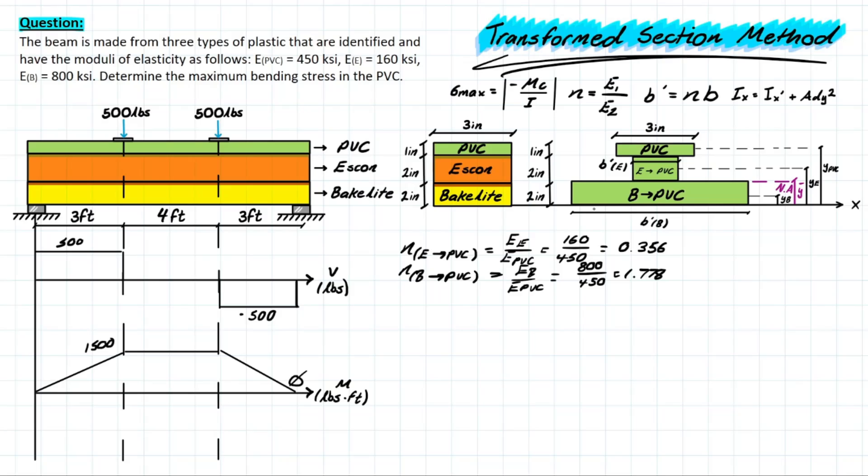Now we can proceed with finding these B' values for each of these new transformations. So the first one we can do is for the Escon. So if we do B'e, it's going to be the modular ratio that we just solved for, which is 0.356. And we're multiplying it by its original length, which was 3 inches. Solving for that, you're going to be left with 1.068 inches. And then you do the same for the bakelite as well, 1.778 for the bakelite transformation, and that's 3 inches once again. And that gives us 5.334 inches.